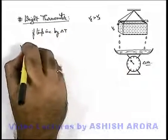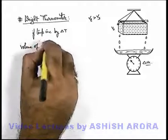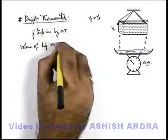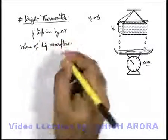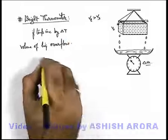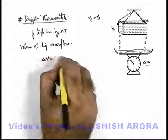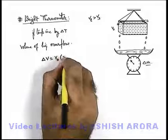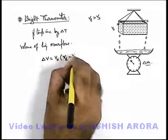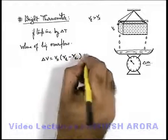So we can directly write the volume of liquid overflow by using the phenomena of apparent expansion of a liquid in a container, which can be written as V₀(γ_l - γ_container)ΔT.